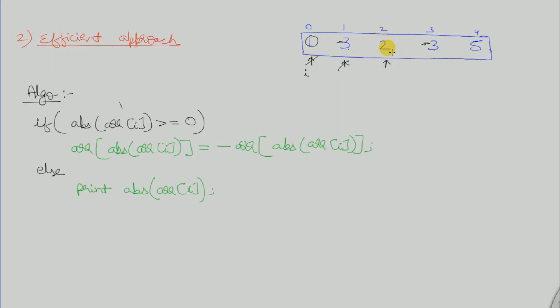At index 2, we check for absolute of array[2], which is 2. Since it's greater than or equal to 0, we make it negative and move to the next element, which is index 3.